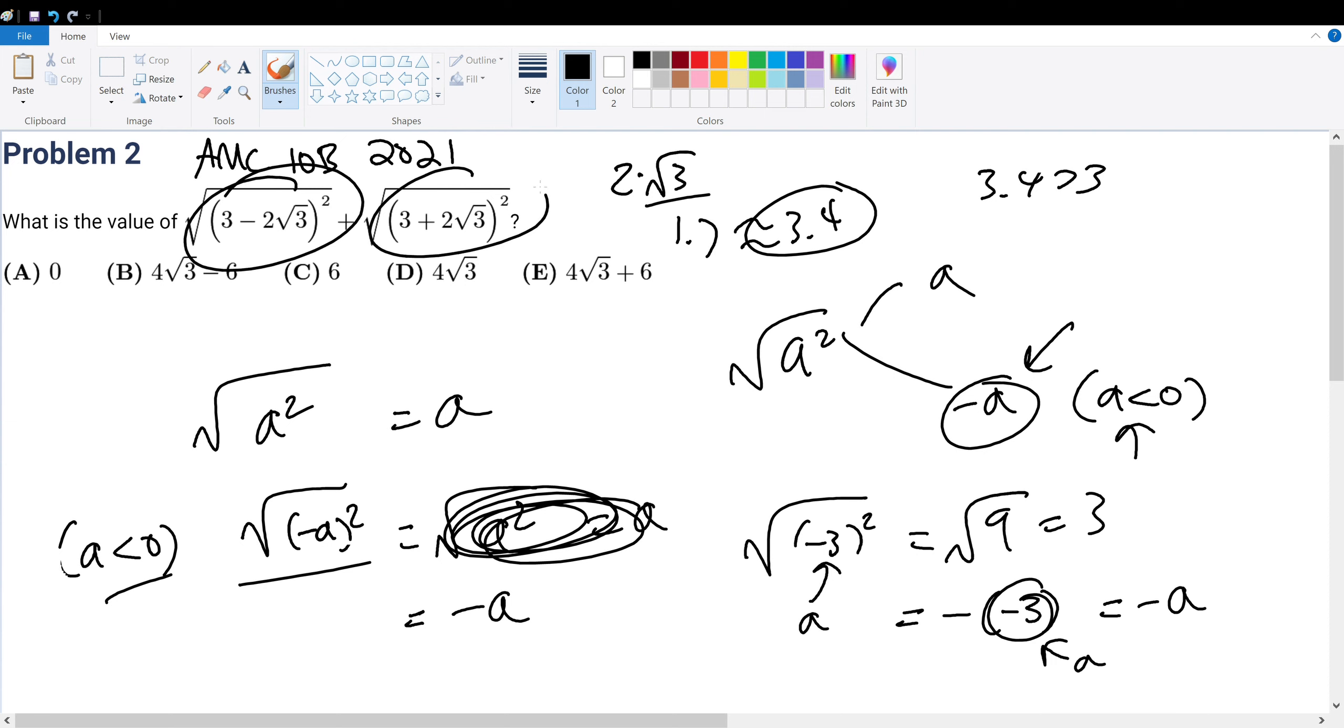This following expression will be positive, so that means this quantity should be equal to the negative of 3 minus 2 root 3, and this quantity should be positive: 3 plus 2 root 3. So that means...